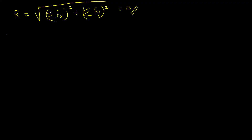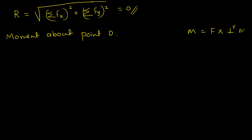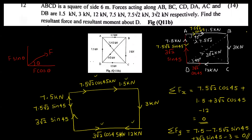Now, what is the moment about point D? Moment equals force into perpendicular distance. For forces at D, the perpendicular distance from D is zero, so their moment contribution is zero. We consider forces along DC, DA, and the diagonals from D.